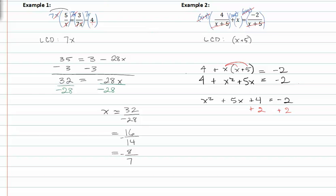and I get x squared plus five x plus six is equal to zero. Factoring my quadratic equation gives me x plus three times x plus two.